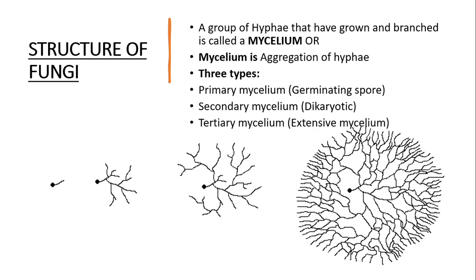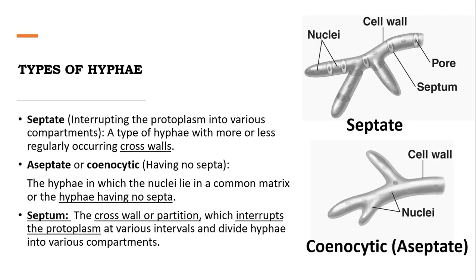There are different types of mycelium. Number one is primary mycelium, which is a germinating spore. Number two is secondary mycelium, which consists of dikaryotic hyphae. Number three is tertiary mycelium, which is an extensively branched bunch of mycelium.